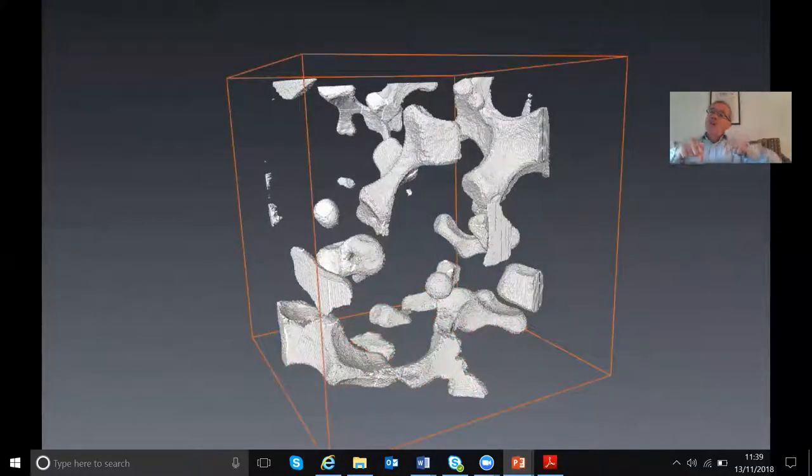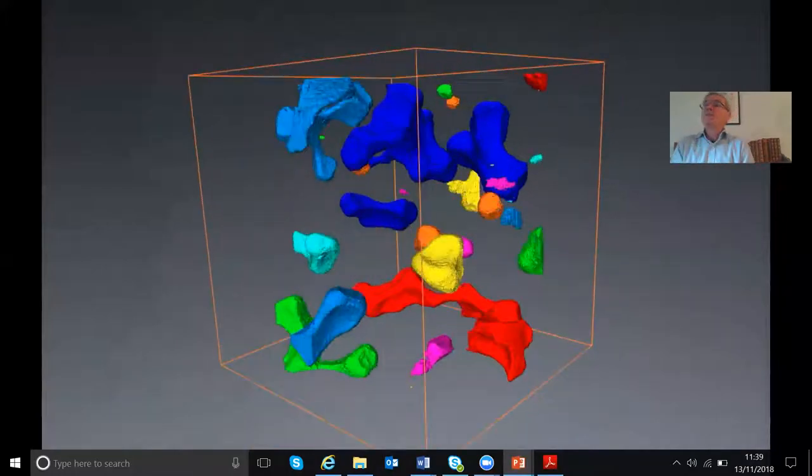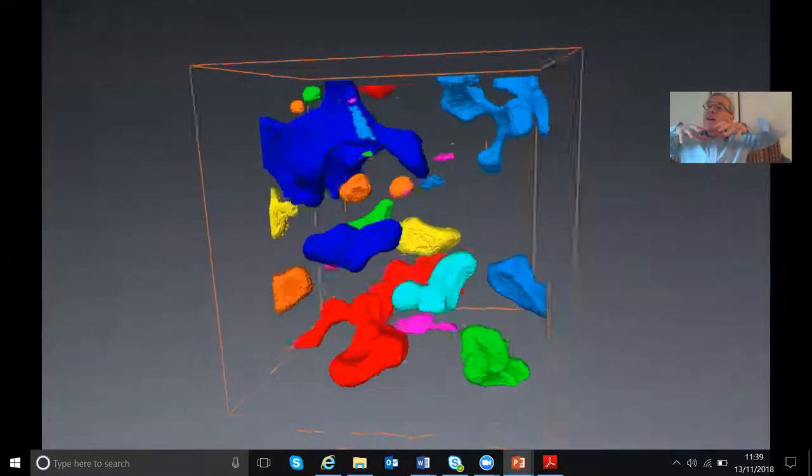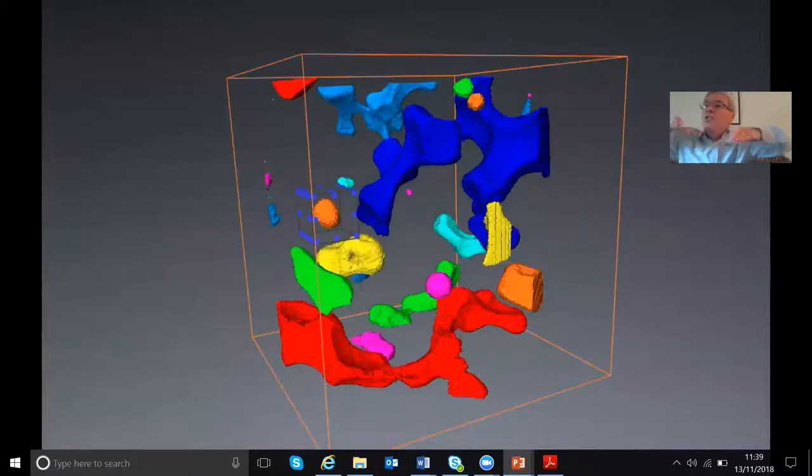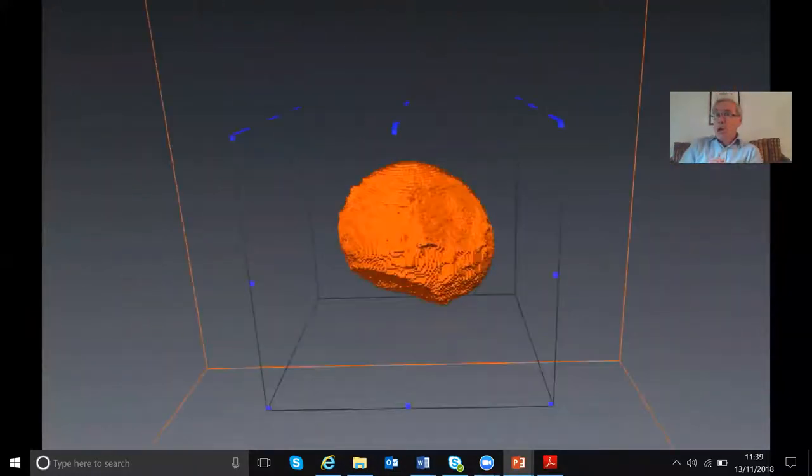And what we're showing here are blobs of carbon dioxide. So we've injected carbon dioxide into this rock at high pressure and then displaced with water. And the carbon dioxide is the non-wetting phase. It's sitting in the large pores with this curvature that bulges outwards.